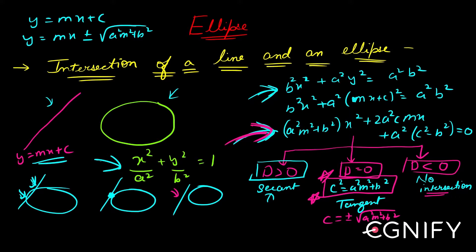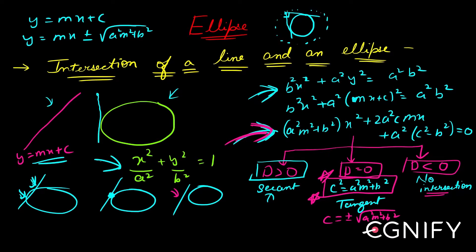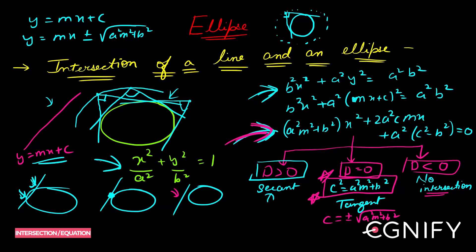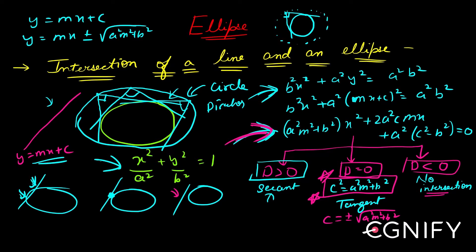Now I want to derive the equation of the director circle. You already know what a director circle is — we discussed this for a circle. When you have a circle, from a point outside you can draw two tangents; if those two tangents are perpendicular, the locus of all such points is the director circle. The same concept applies to an ellipse: from a point outside the ellipse, two tangents can be drawn, and if those tangents are perpendicular, the locus of all such points forms a circle called the director circle.